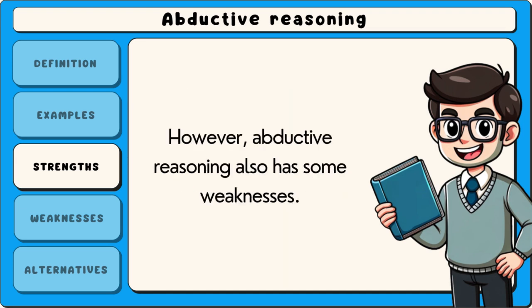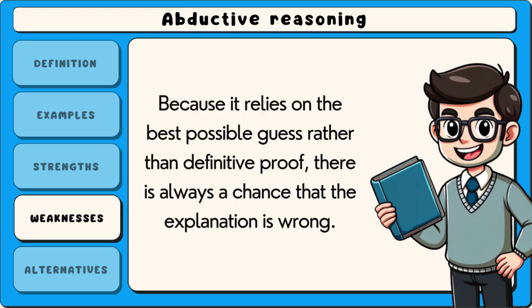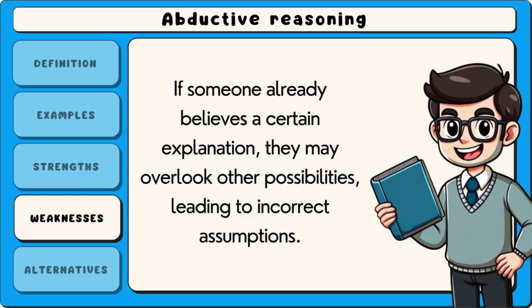However, abductive reasoning also has some weaknesses. One weakness is that it does not guarantee correct conclusions — because it relies on the best possible guess rather than definitive proof, there is always a chance that the explanation is wrong. Another challenge is that people can be influenced by bias when using abductive reasoning. If someone already believes a certain explanation, they may overlook other possibilities, leading to incorrect assumptions.